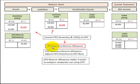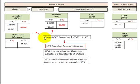Here we're going to be reviewing the LIFO inventory reserve allowance. This LIFO reserve allowance adjusts our FIFO inventory to the LIFO basis, and we use it to make it easier to compare companies that aren't using the LIFO basis. In our examples, we're going to be looking at converting the FIFO inventory and cost of goods sold to the LIFO basis.